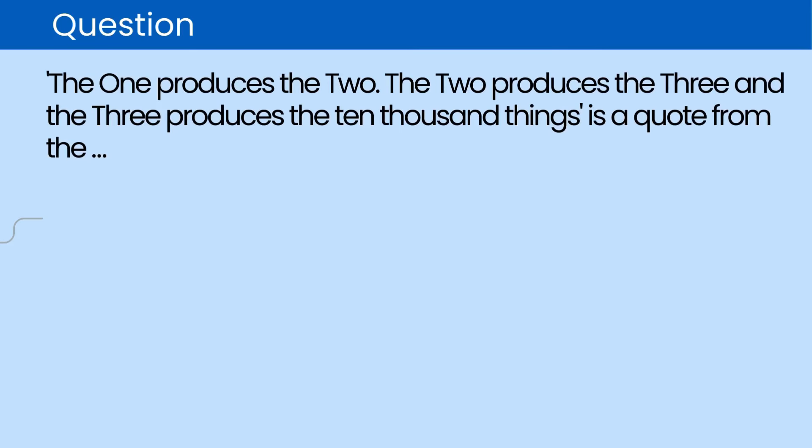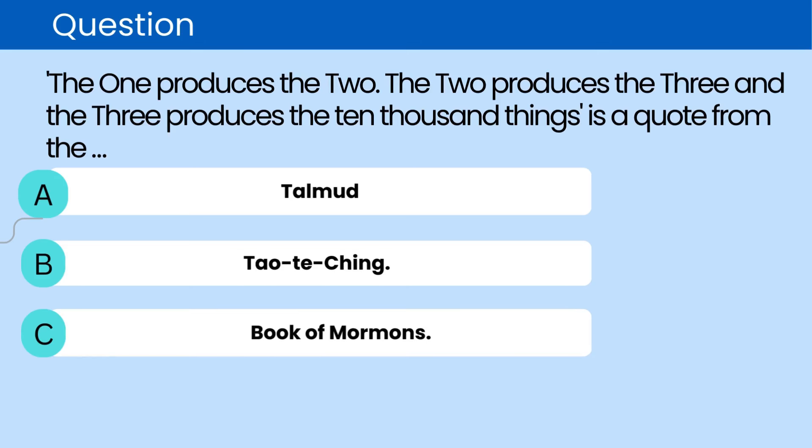Question: The one produces the two. The two produces the three and the three produces the ten thousand things is a quote from the. A. Talmud. B. Tao Te Ching. C. Book of Mormons. D. Vedas. The correct answer is B. Tao Te Ching.